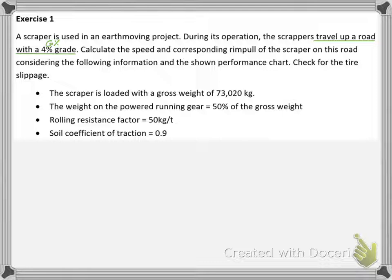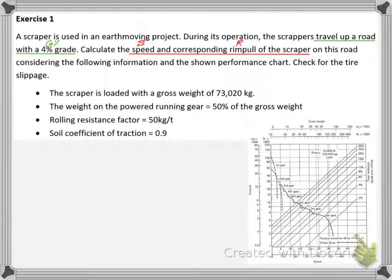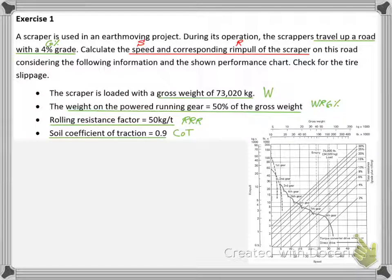The scraper travels on an upward grade of 4%. We need to calculate the speed S and rim pull R of the scraper. We are given a performance chart and the following operational data: the scraper weight W, weight percentage on the powered wheel WRG%, rolling resistance rate RRR, and coefficient of traction COT.